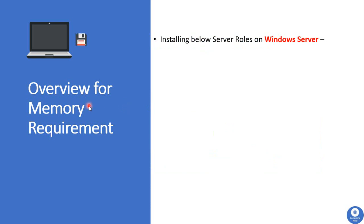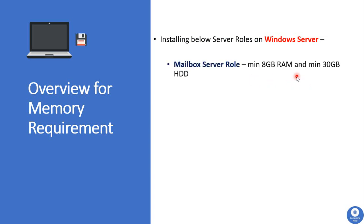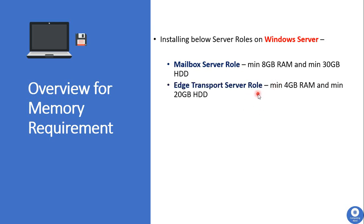Now we will see memory requirements to install Exchange 2016. To install the Mailbox Server role, we need a minimum of 8 GB of RAM and 30 GB of hard disk. If you are planning to host user mailboxes on-premises and save all log files on-premises on the Exchange Server, then you have to add more memory. To install the Edge Transport Server role, we need a minimum of 4 GB of RAM and 20 GB of hard disk. The supported file format is NTFS.